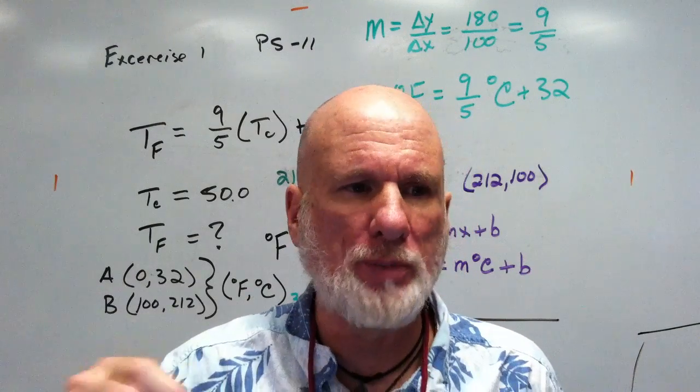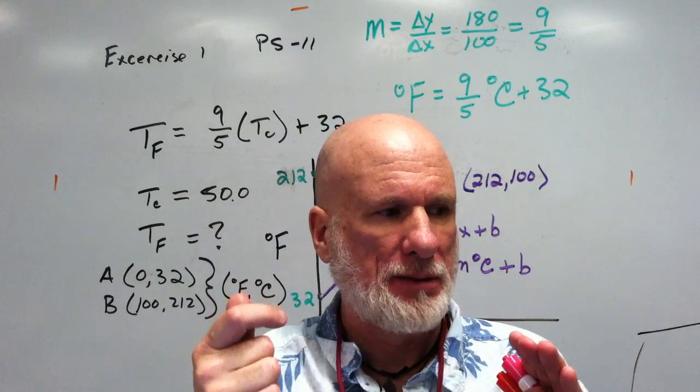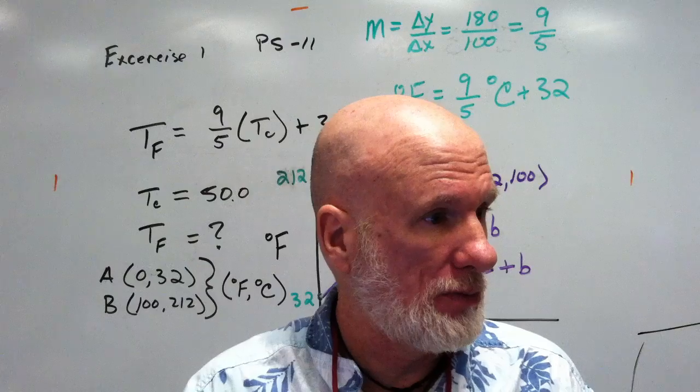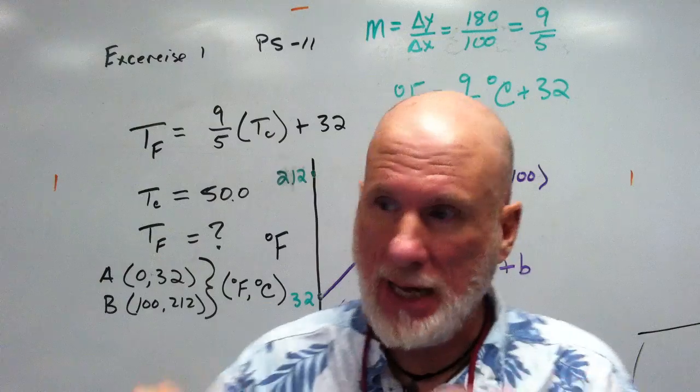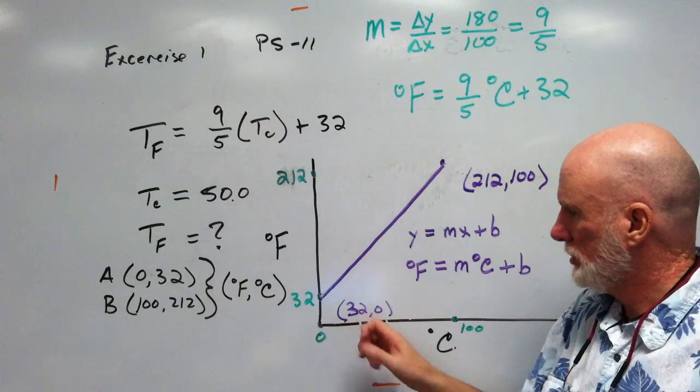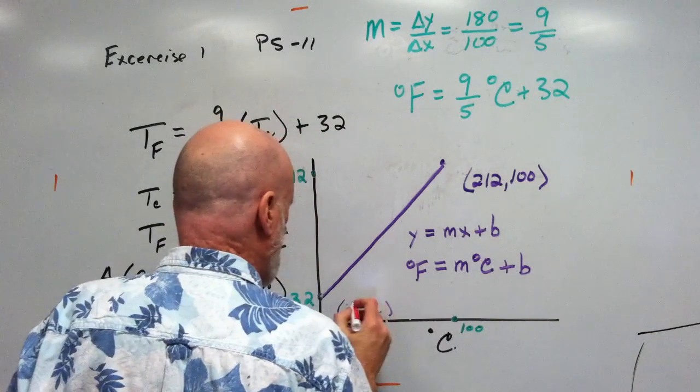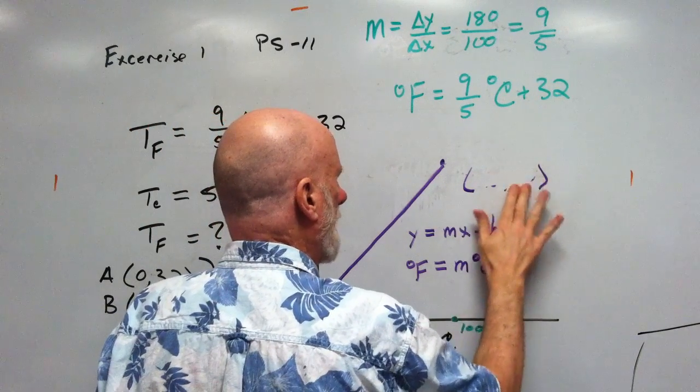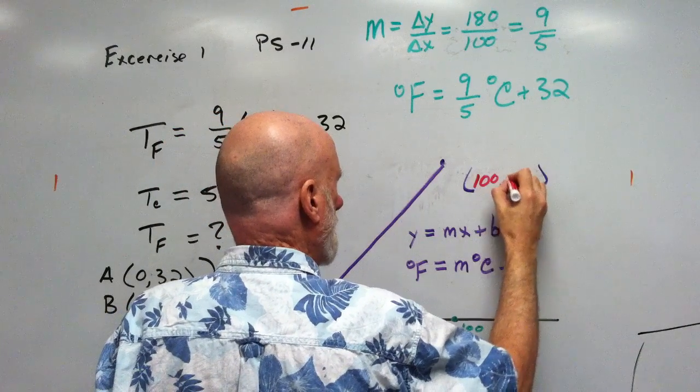But anyway, so what would be two points? In other words, what temperature in Celsius do you know right off the bat the same temperature in Fahrenheit? Freezing, right? Freezing is zero, zero, comma, 32. X and Y. X, Y, Celsius, Fahrenheit. 32. Sorry, that's drawn incorrectly. Would be zero, 32, right? Zero, 32. This will be 100, 212.